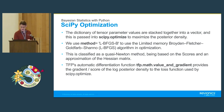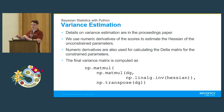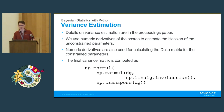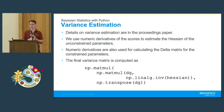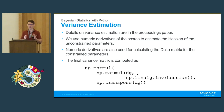For variance estimation, all the details are in the proceedings paper. We're using numerical derivatives — we could do it analytically as well, but that can be computationally intensive. Once we have the individual pieces — the delta method matrix, the Hessian, etc. — it's just one computation to put it all together.